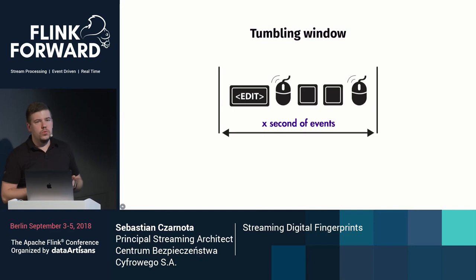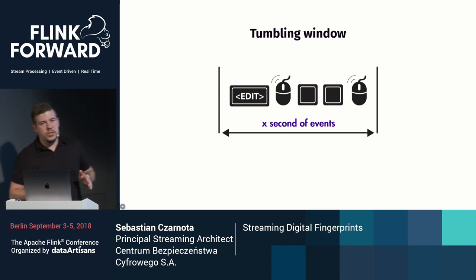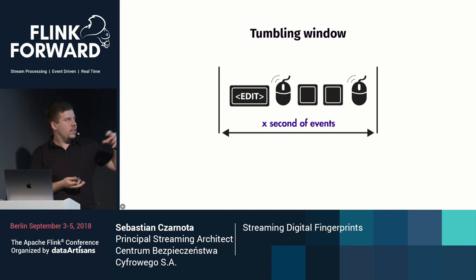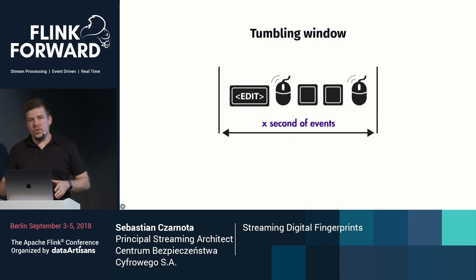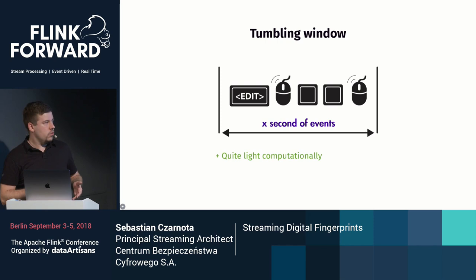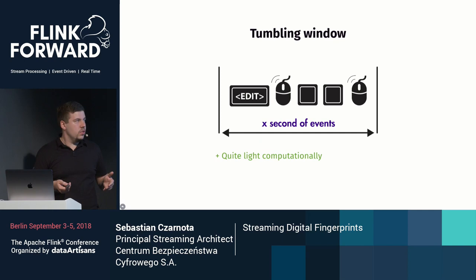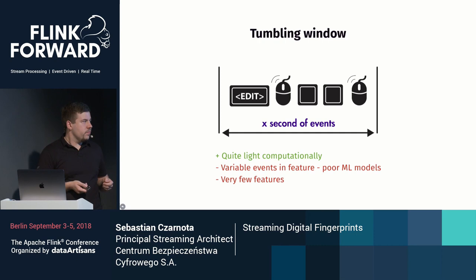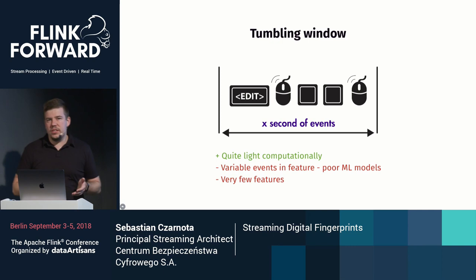How do you group events in Flink? Windows. The simplest way is tumbling windows — a periodic window that fires every X seconds, grouping all events from the last X seconds. Consecutive windows do not overlap, and you get a feature every X seconds. This was quite cheap because we processed only a limited amount of data in each window. However, we got very poor machine learning results and very few features — we were getting one or two features every 50 seconds regardless of how many models we used.